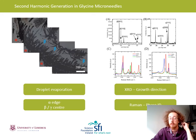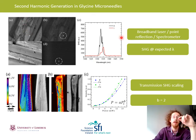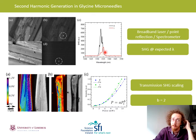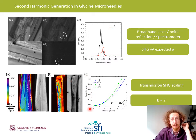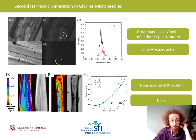Now that we have our microneedles and know their phase and crystal growth direction, we can start doing SHG measurements. The best way to confirm SHG is simply to measure it with a spectrum. We did this in a separate setup with a broadband laser doing point reflection and recording the signal in a spectrometer. The broadband laser was filtered around 1064 nm with a 10 nm bandpass filter, so we'd expect our second harmonic between 530 and 535 nm, which is what we see. We then switch to the transmission microscope and check the scaling of the SHG signal as a function of incident power — it's a second-order nonlinear process, so we expect a quadratic relation, and we get a very close fitting factor of 2.